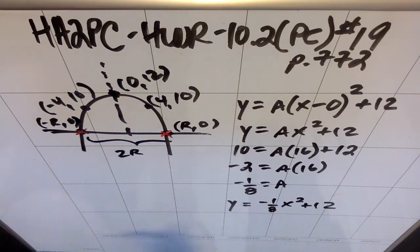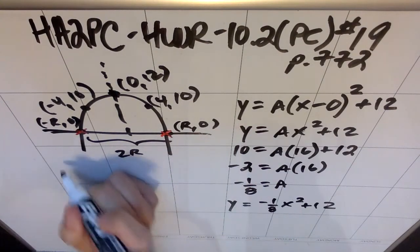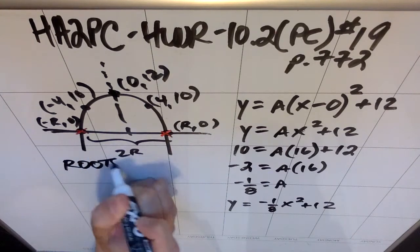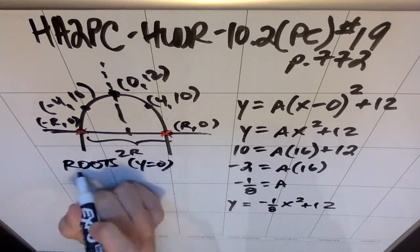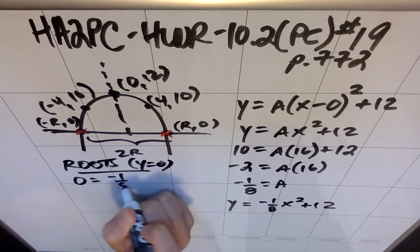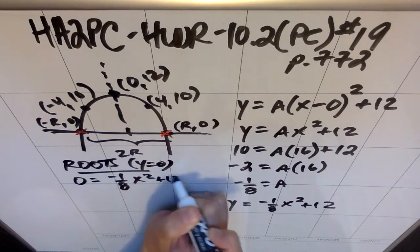So if I can just find the root of this thing, I can find the width of the arch at ground level. So I'm going to find those roots by saying roots are when y equals 0. So 0 equals negative 1/8 x² plus 12.